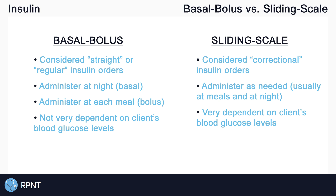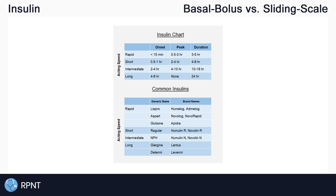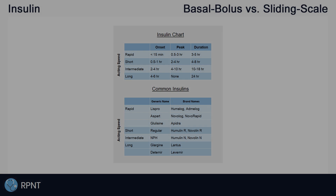And that's about it for the differences between basal bolus and sliding scale insulin orders. To download a list of common insulins with their peaks, onsets, and durations, there's a link in the video description for that. If you have any questions, please let me know in the comments or visit rpnt.ca for more help.